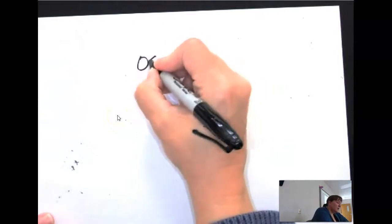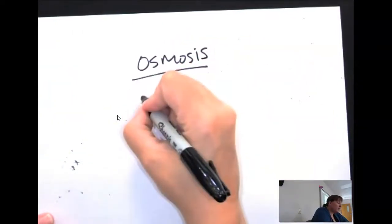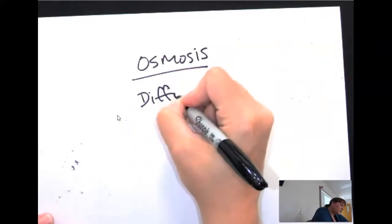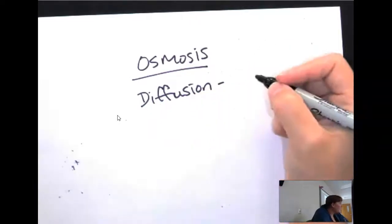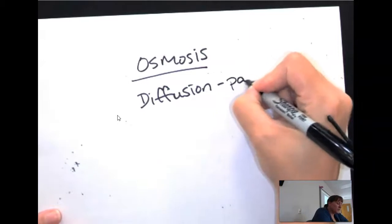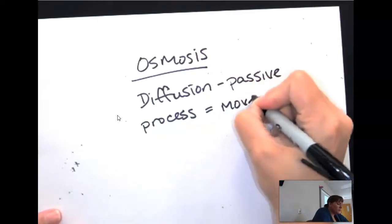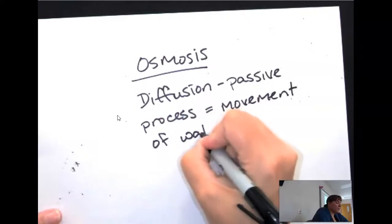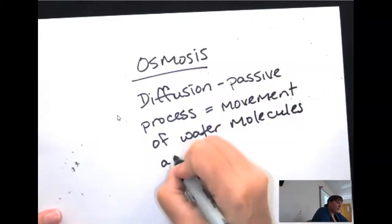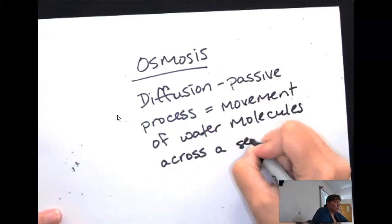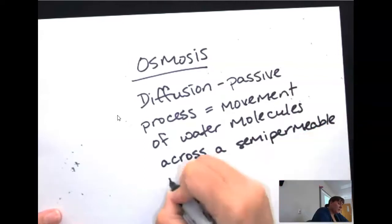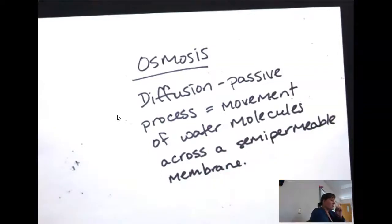Starting the osmosis project, we want to understand that osmosis by definition is diffusion or a passive, non-energy intensive process. It is the movement of water molecules across a semi-permeable membrane. Semi-permeable means some stuff can pass through and other things cannot, and that is our phospholipid bilayer membrane.